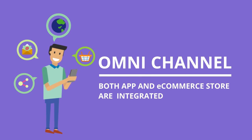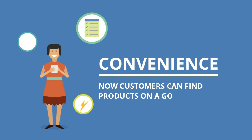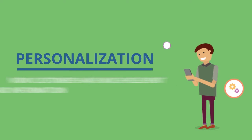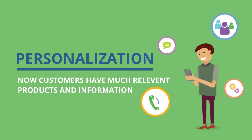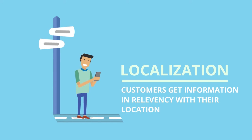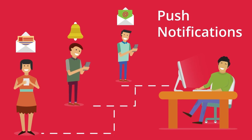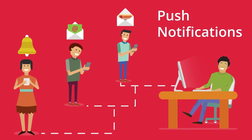John can easily achieve omnichannel sales using the mobile application. It is very convenient for users and users can personalize it as per their requirement. John can also achieve localization and send unlimited push notifications to buyers who are using the mobile app.